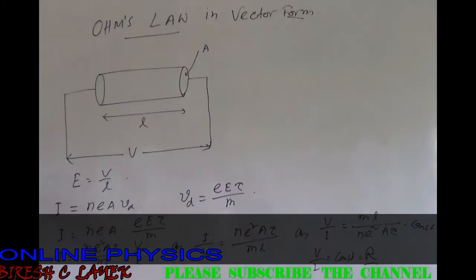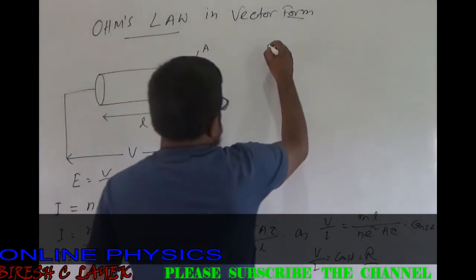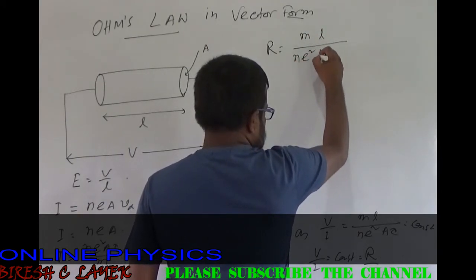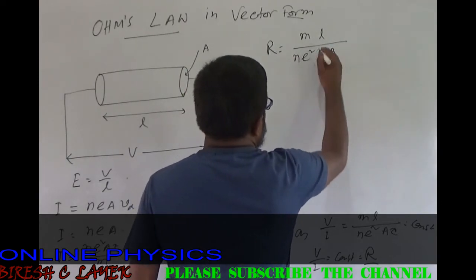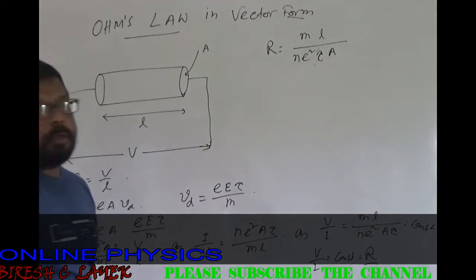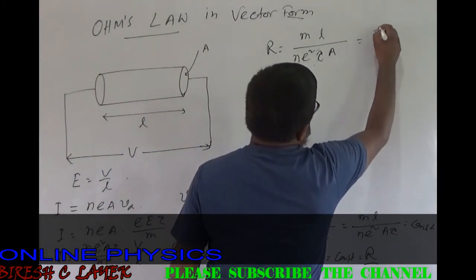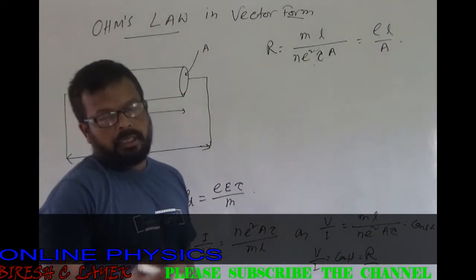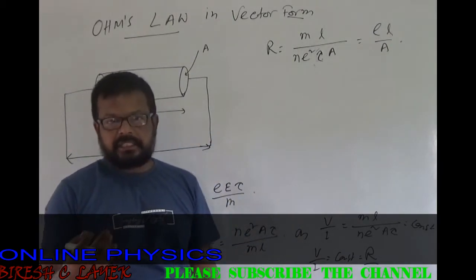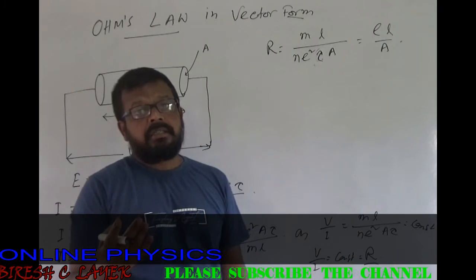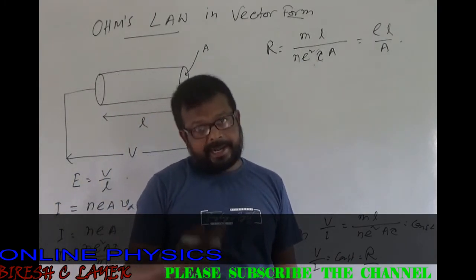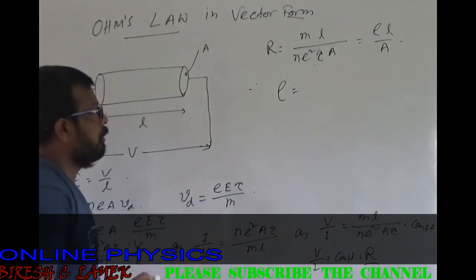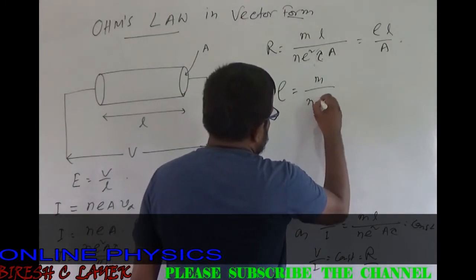Therefore, resistance R equals m·L divided by n·e²·tau·A. This can be compared with the formula R equals rho·L by A, where rho is called the resistivity of the conductor, L is the length, and A is the cross-sectional area. From here we can write resistivity rho equals m divided by n·e²·tau.